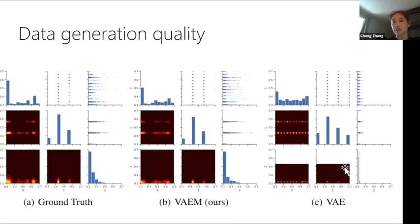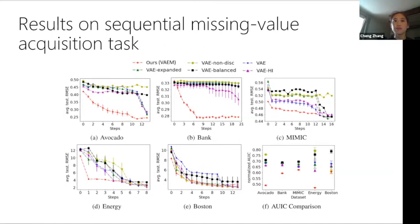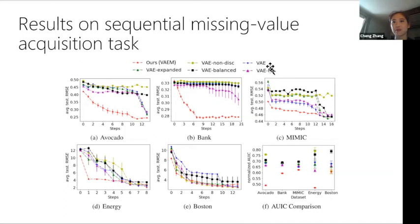Looking at data generation quality: comparing ground truth, VAEM, and standard VAE on the bank dataset, VAEM generates data that looks similar to the ground truth, while VAE fails to capture the data structure. In terms of log-likelihood on multiple UCI datasets and MIMIC — both for fully observed and partially observed data — VAEM fits the data much better than baselines.